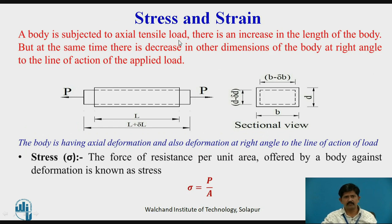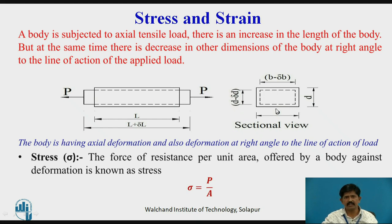Before we start the expression, we need to know some terms — stress, strain, etc. When a body is subjected to a tensile load P, there will be an increase in the length of the member, whereas at the same time there will be a decrease in the other dimensions at right angle to the line of action. The depth decreases by D minus delta D and breadth by D minus delta B. The body has axial deformation and also deformation at right angle to the line of action of load.